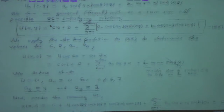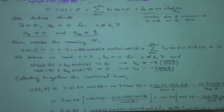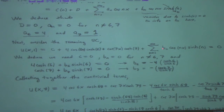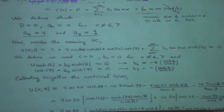Then for the other boundary condition, U of x, 1 — plugging in y equals 1 — we have the contributions from a sub 6 and a sub 7 (the only survivors) plus the b sub N's times cosine nx times sinh of n. This tells us that c must be 0, since there's nothing else to balance it out against, and b sub N equals 0 for all N except N equals 6 and N equals 7, which are determined by requiring the bracket to vanish.